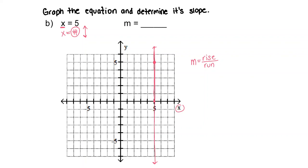So our rise here from our first point to our hypothetical point is 1, 2, 3, 4, 5. And our run, since it doesn't move any places to the left or to the right, is 0.